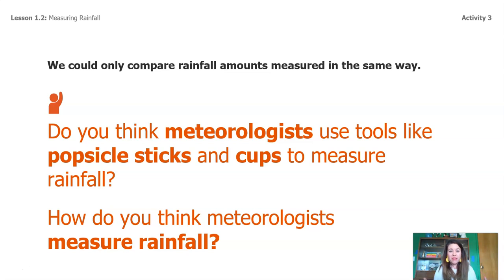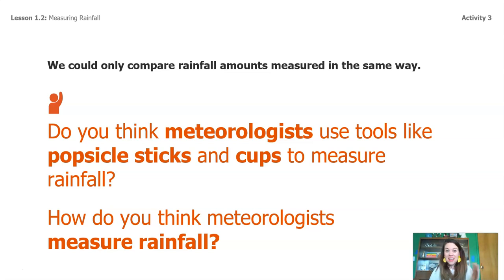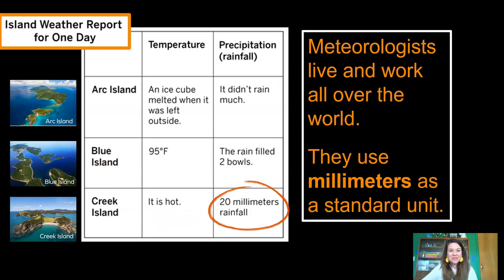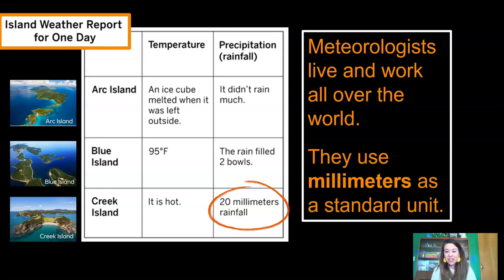We can only compare rainfall amounts that are measured in the same way. Do you think real-life meteorologists use tools like popsicle sticks and cups to measure rainfall? Meteorologists live and work all over the world, and to communicate with each other about how much rain has fallen in an area, they have to use the same type of measurement. They don't use popsicle sticks and they don't use pop cubes.